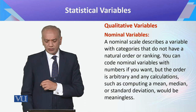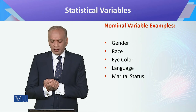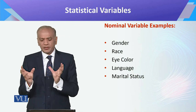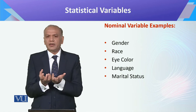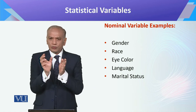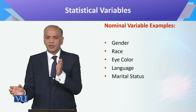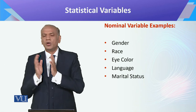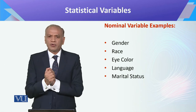Then in nominal variables we have gender, race, eye color — all these things. And these things are not totally independent — if you have a qualitative variable, we can also count its quantity alongside. When we count its occurrences, then both things together provide you with the analysis.